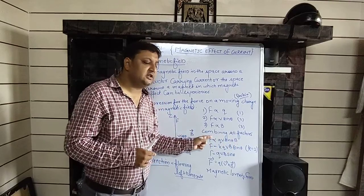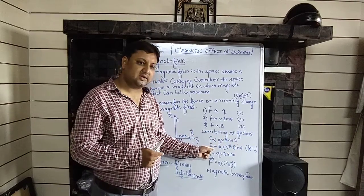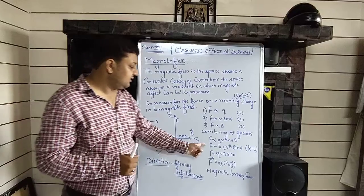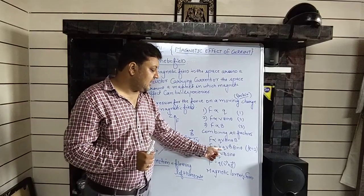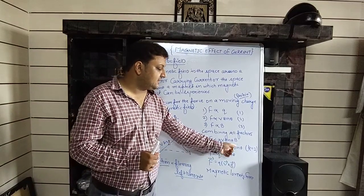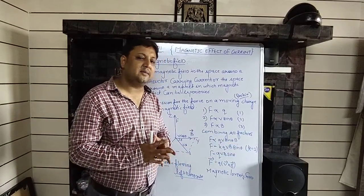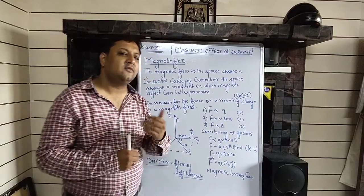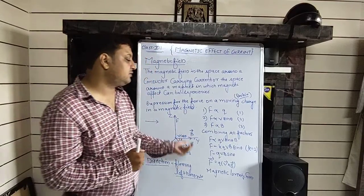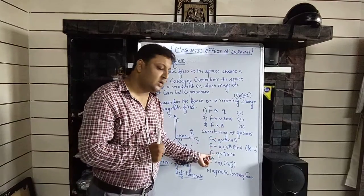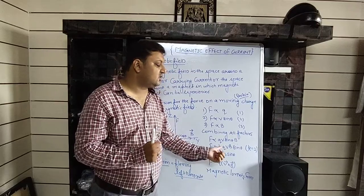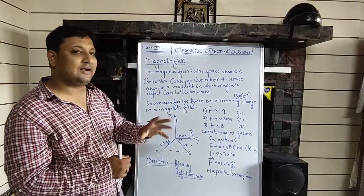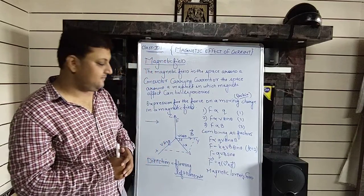When you remove the proportionality sign, you put a constant k: F = kqvB sinθ. Experimentally, the value of k is found to be 1, so you can say F = qvB sinθ. This can also be written in vector form.